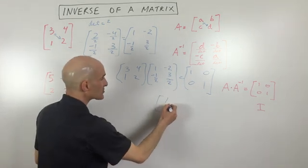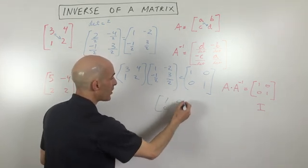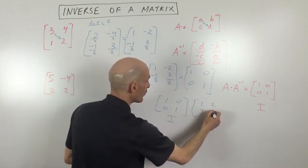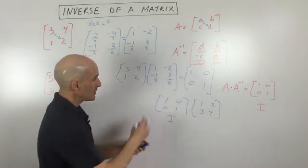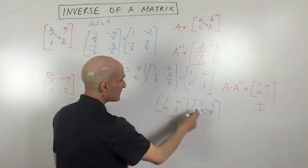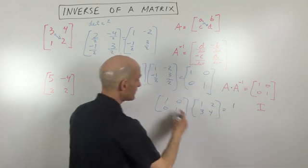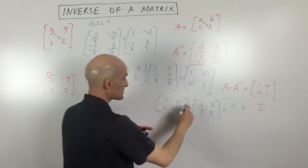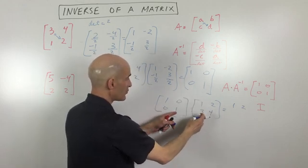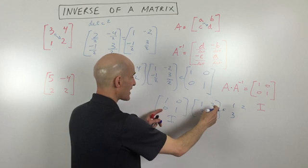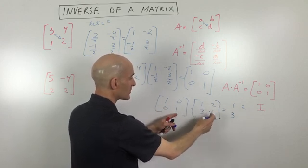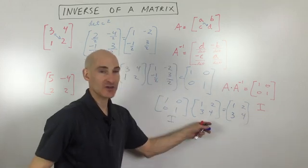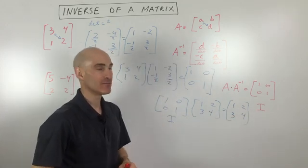Just to show what the identity matrix does — let's say we have the identity matrix: one, zero, zero, one. And we multiply it by the matrix one, two, three, four. First row, first column gives us one and zero, which is one. First row, second column gives us two plus zero, which is two. Second row, first column gives us zero plus three, which is three. Second row, second column: two times zero is zero, one times four is four — we get four. You can see we get the same identical matrix back, just like multiplying by the number one.